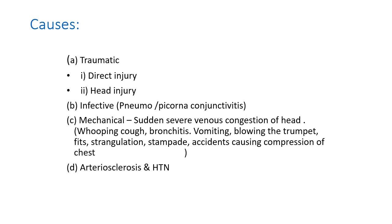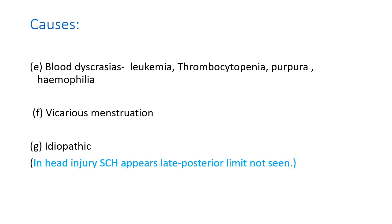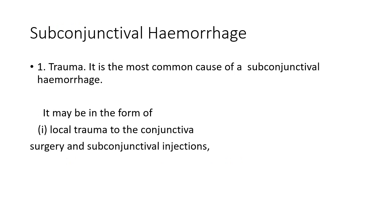In arteriosclerosis and hypertension, an increase in systolic blood pressure can cause subconjunctival hemorrhage. In blood dyscrasias: leukemia, thrombocytopenia purpura, hemophilia. Vicarious menstruation — subconjunctival hemorrhage at the time of menstruation, also called 'bloody tears' — is an extremely rare cause. Trauma is the most common local cause, including surgery and subconjunctival injection.